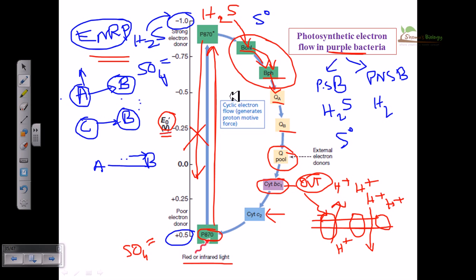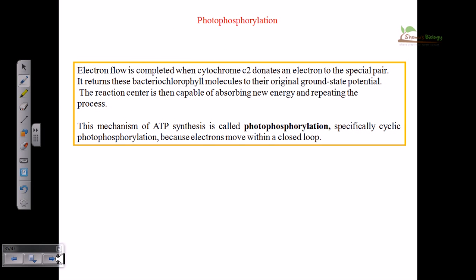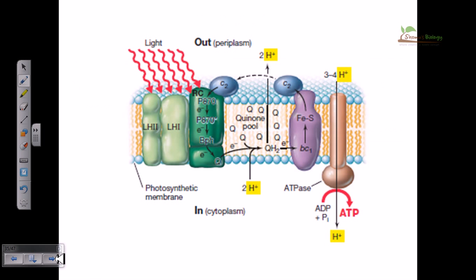A molecule with higher reduction potential passes the electron to its neighbor which has a lower reduction potential. That is the basic principle by which the cycle is completed and this process is actually carried out. Now let us move on to the next slides.